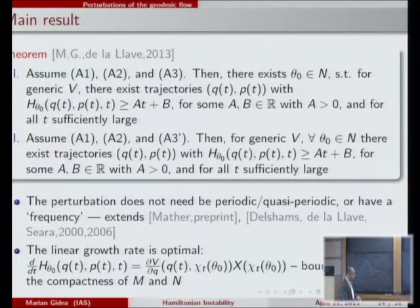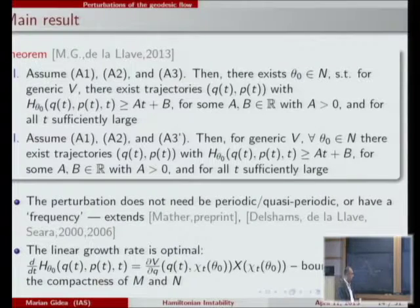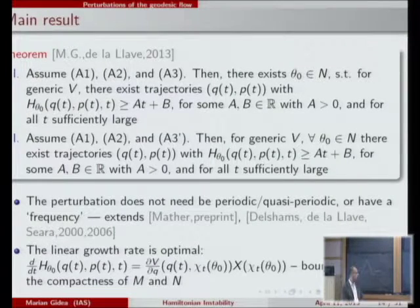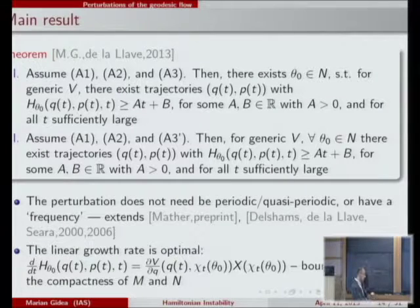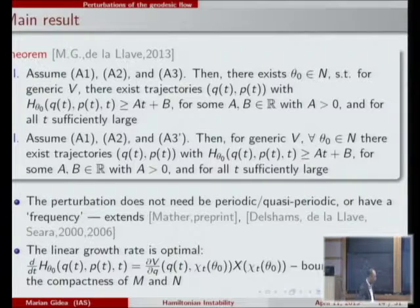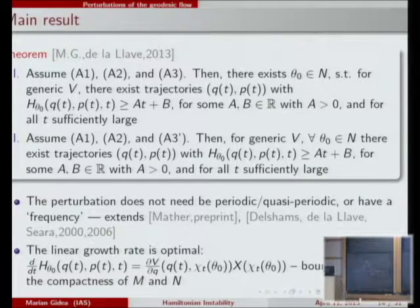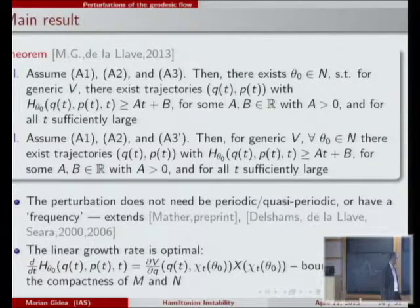Linear growth of the energy with respect to time is optimal, as can be shown by a simple computation. Taking the derivative of the energy along the trajectory, it depends on the derivative of V and on the vector field, and compactness gives a bounded quantity, yielding a linear rate as an upper bound.